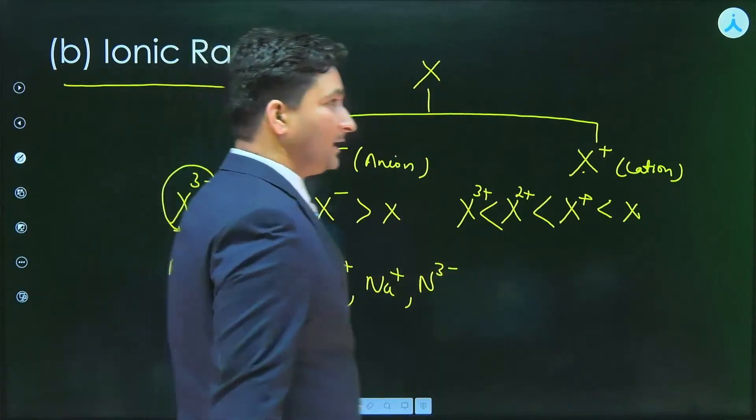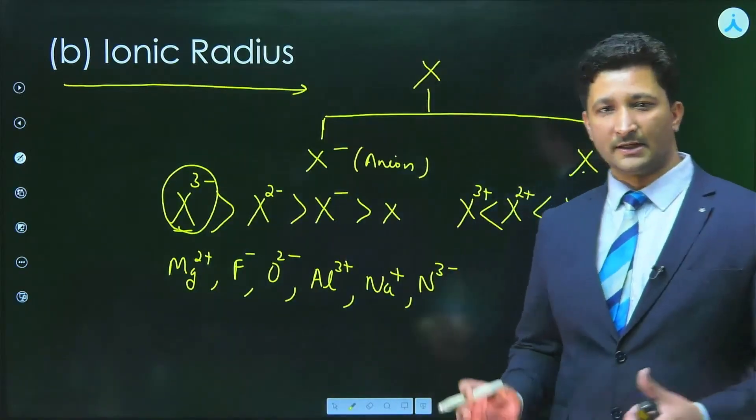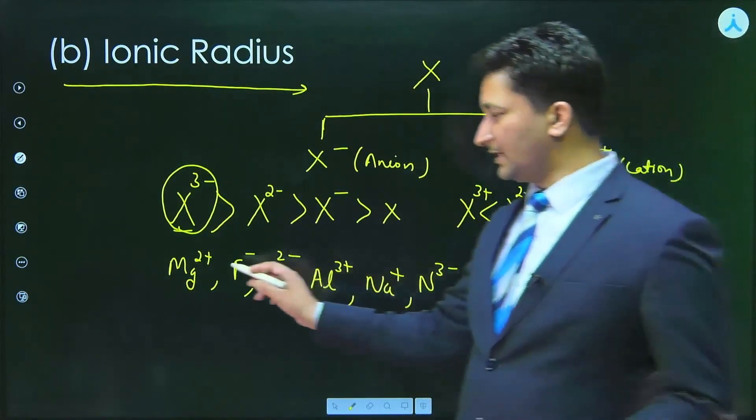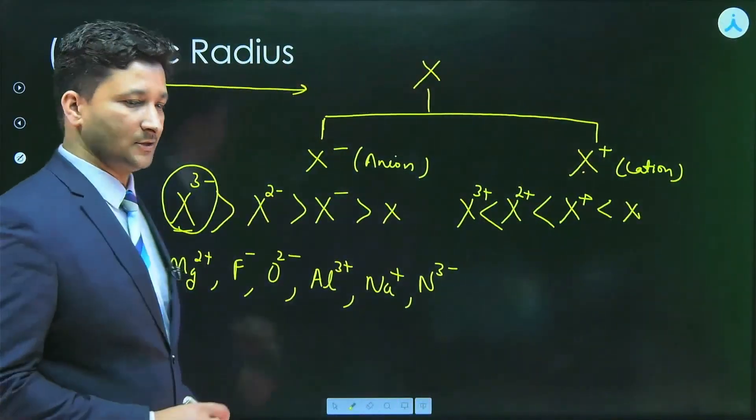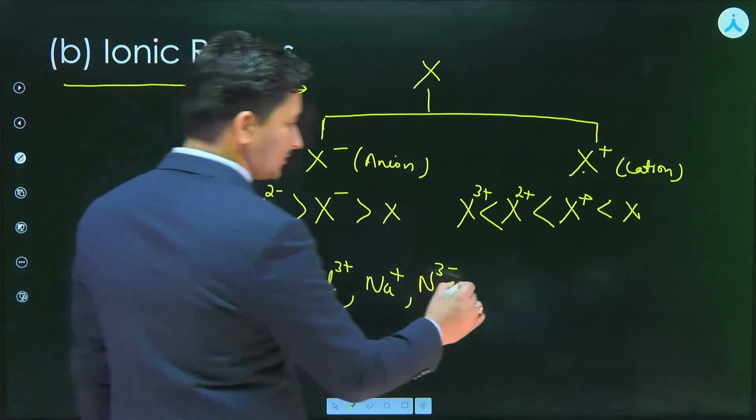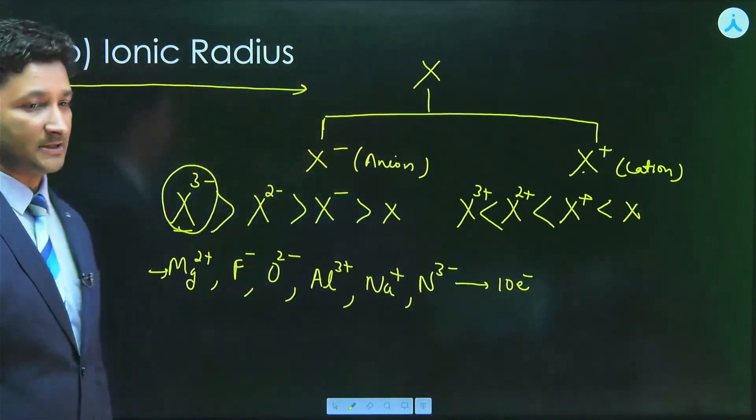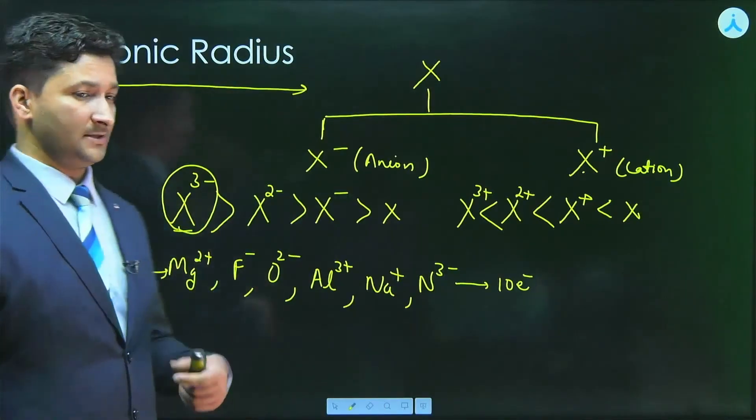Na plus, N3 minus in the increasing order, decreasing order of their size. Then what you can see here is they all have 10 electrons, so they are isoelectronic species.